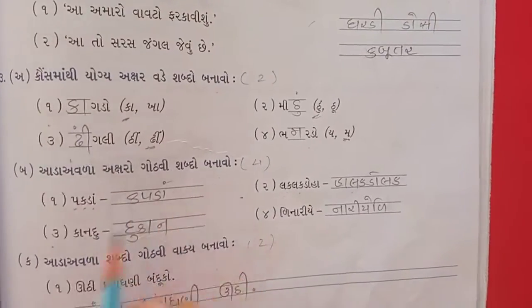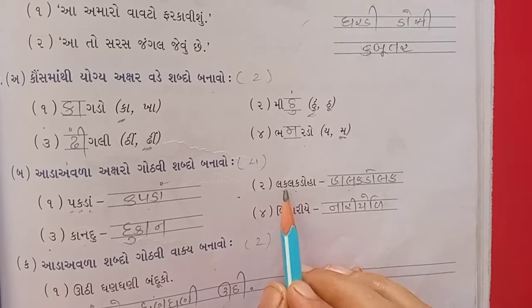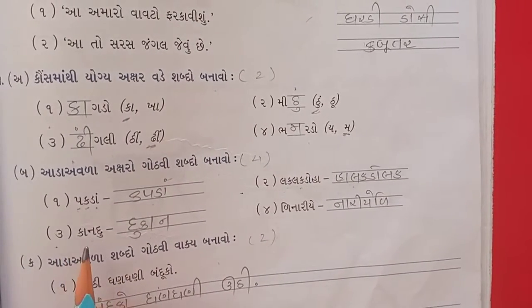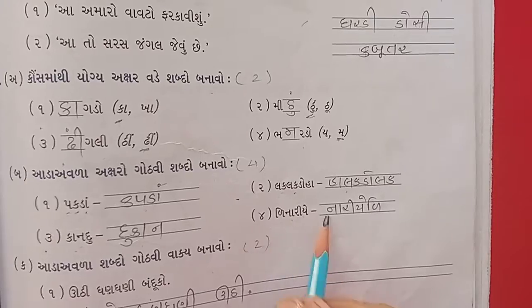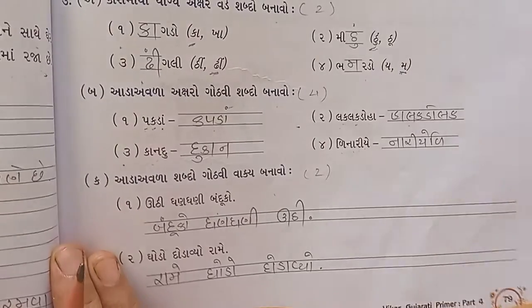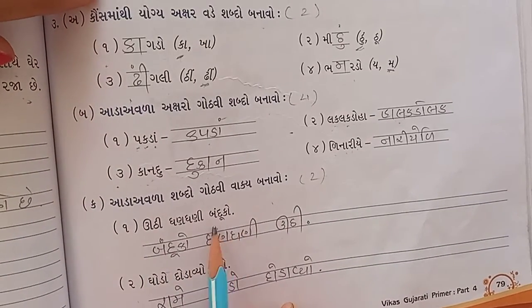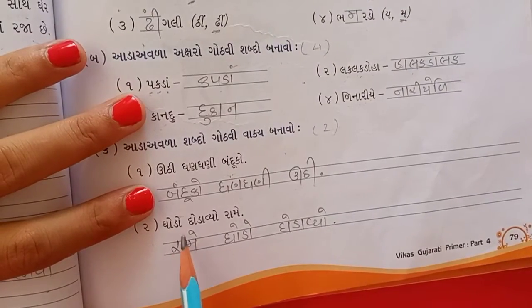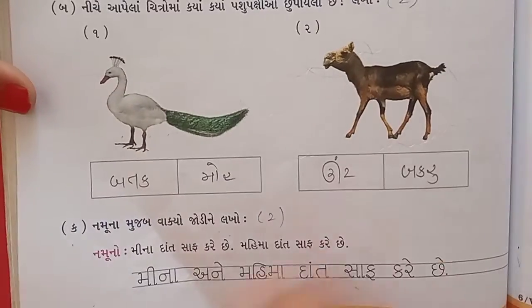આડાવડાક શબ્દ ગોઠવી શબ્દ બનાઓ: પચ્ય, આઉસ, હાલક, ડો, લક, પચ્ય, આઉસ, દૂ, કાનનારી, એડી, નારી, એડી. આડાળા શબ્દ ગોઠવી વાક્ય બનાઓ: ઉટી, તણ, તણી, બંકુ, તો બંકુ તણ તણ્તણી ઉટી. રામે કોડો દોડાવ્યો. Page number 79.